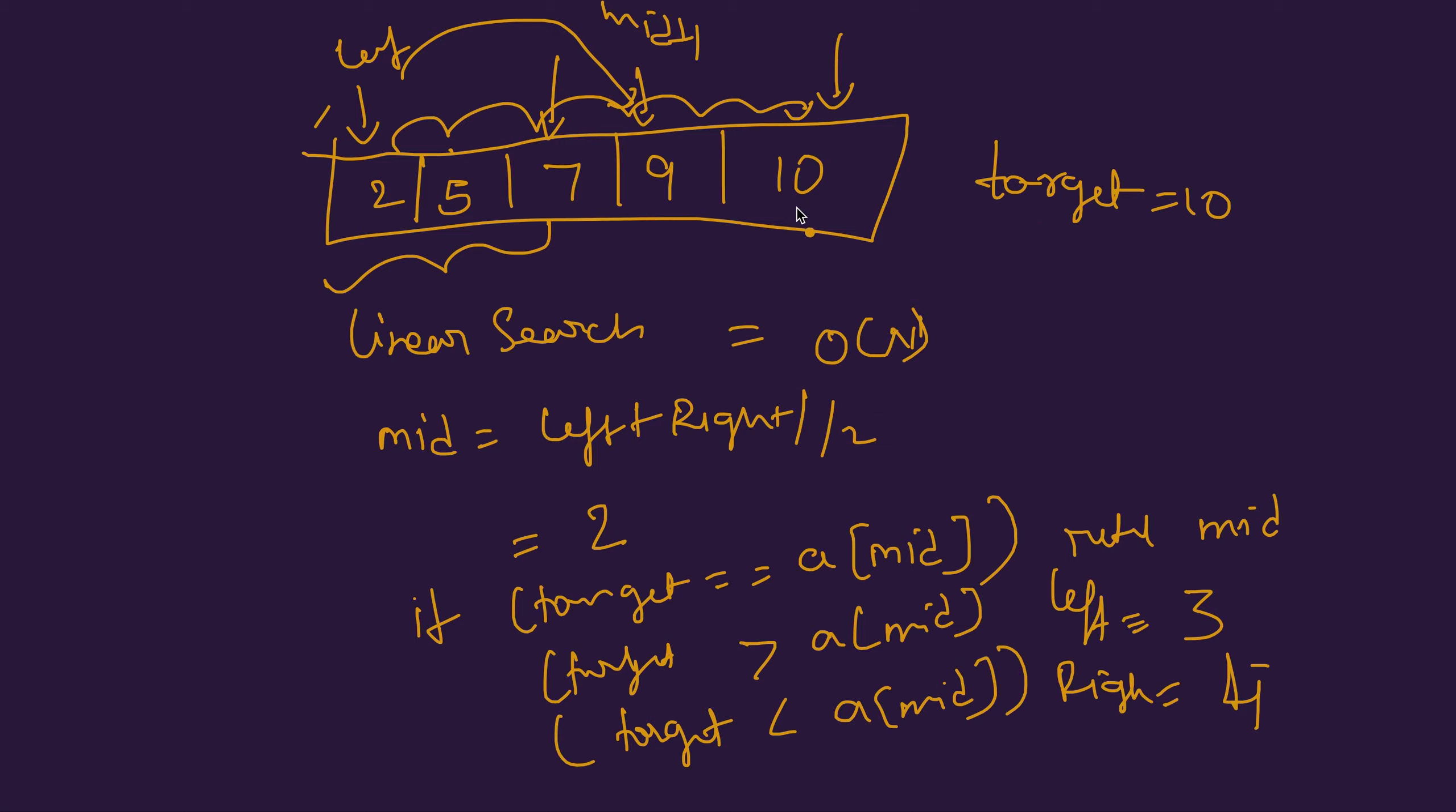In the second iteration, the mid would become 3 plus 4 by 2, which in this case would return 3 again. Now it checks if the target is equal to mid, which is not. If the target is greater than mid, that's true.